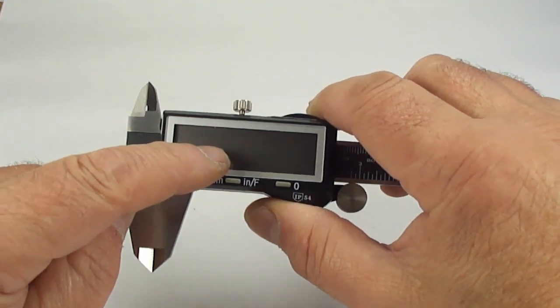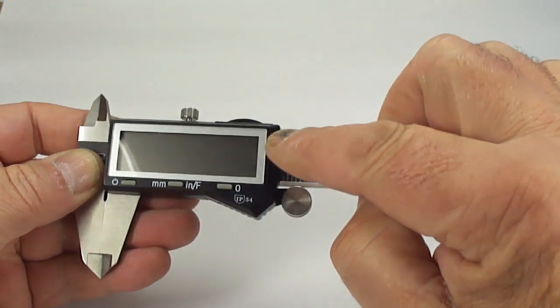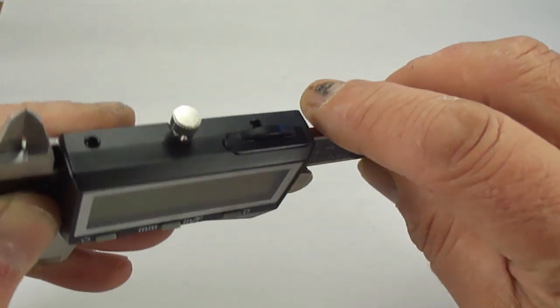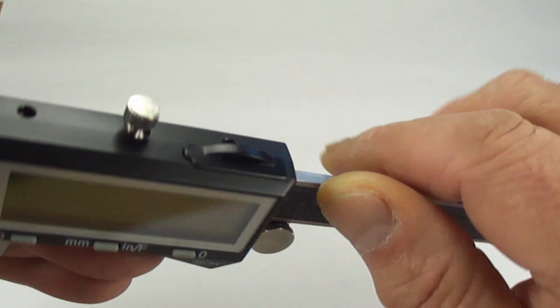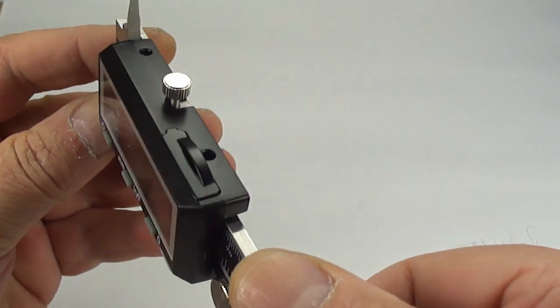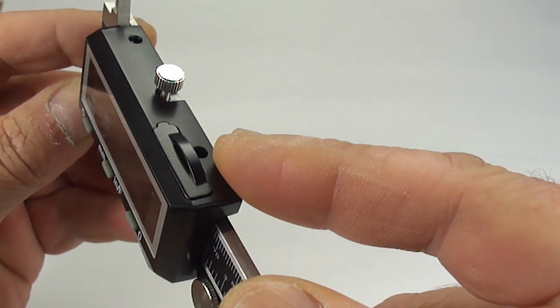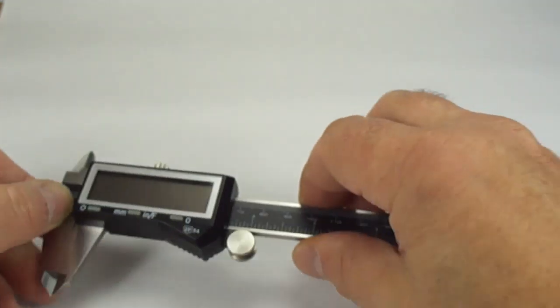Now another reason why I like this particular set is, first and foremost, the battery compartment to the very top there. Okay, you can see to the top, the battery sits inside to the top of the caliper.